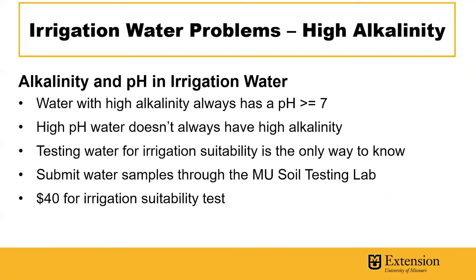Water with high alkalinity always has a pH greater than 7, but high pH water doesn't always have high alkalinity. Testing your irrigation water for suitability is the only way to know. You can submit samples through the MU soil testing lab to find out. There's a $40 test for irrigation suitability and you'll need to submit a 16-ounce sample.